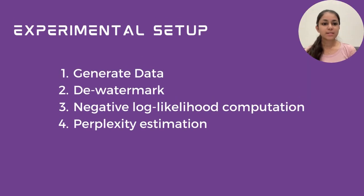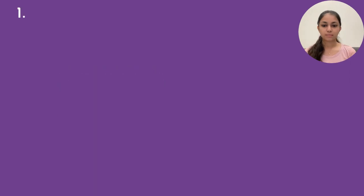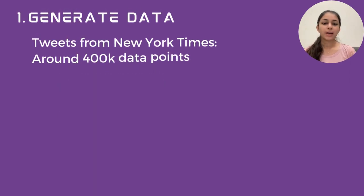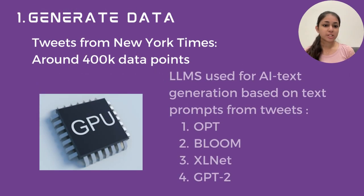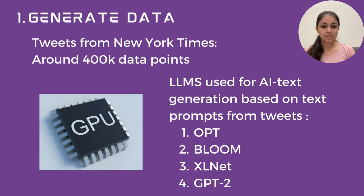Our experimental setup is as follows. First we generate data, then we perform experiments on de-watermarking, negative log likelihood computation, and perplexity estimation. In order to generate the data, we first collected around 400,000 tweets from the New York Times, then used the LLMs OPT, Bloom, ExcelNet, and GPT-2 to generate the AI texts.